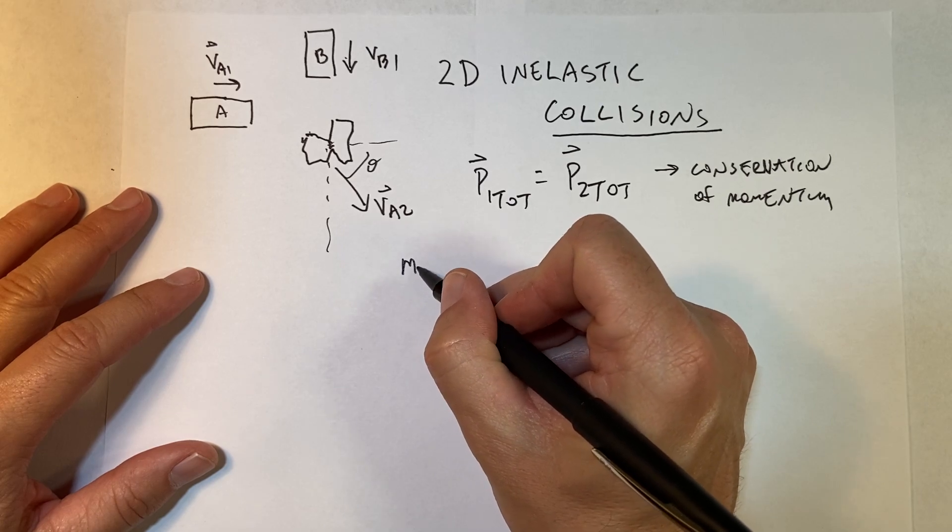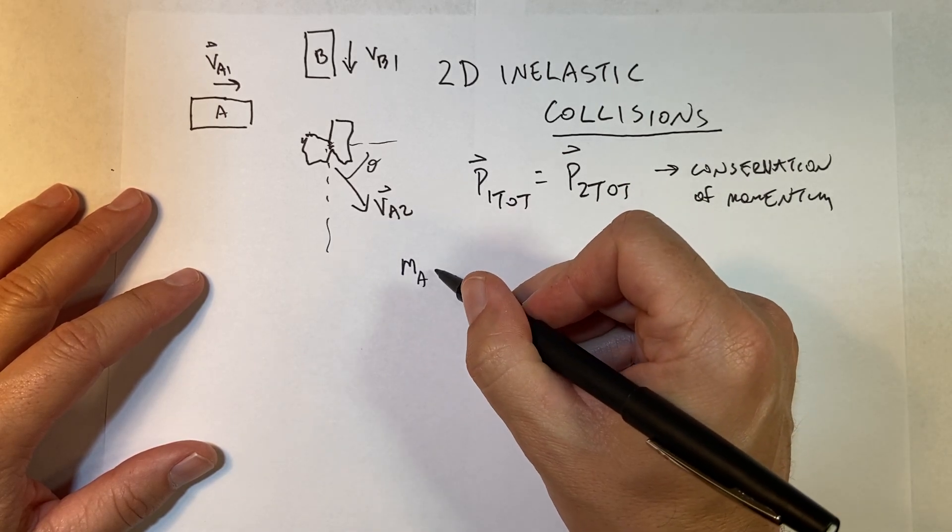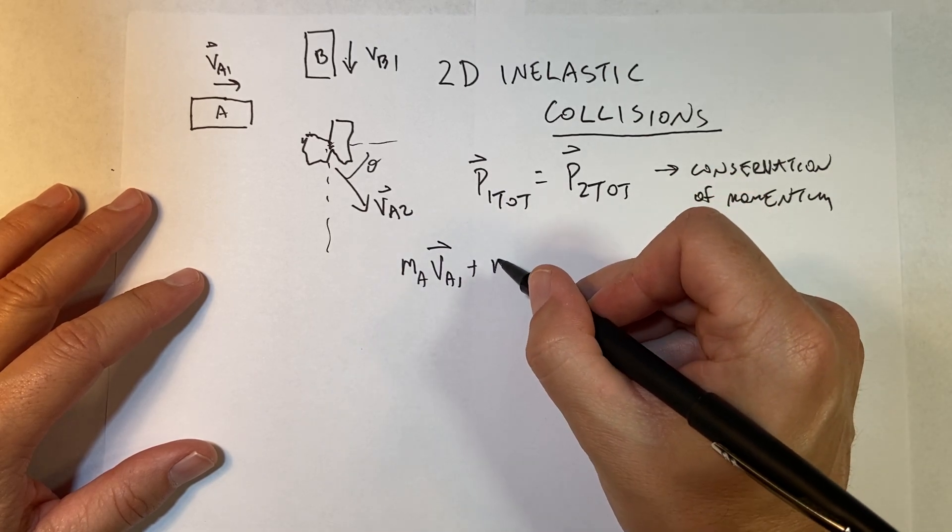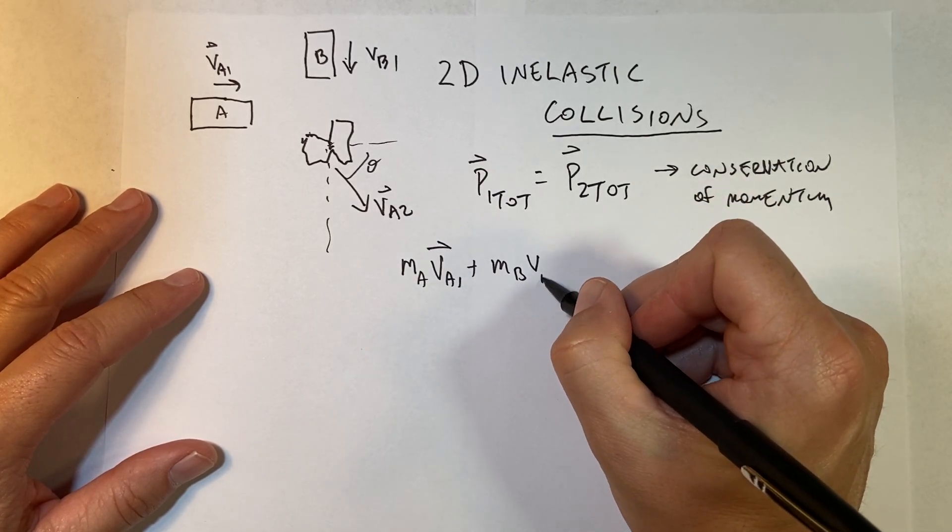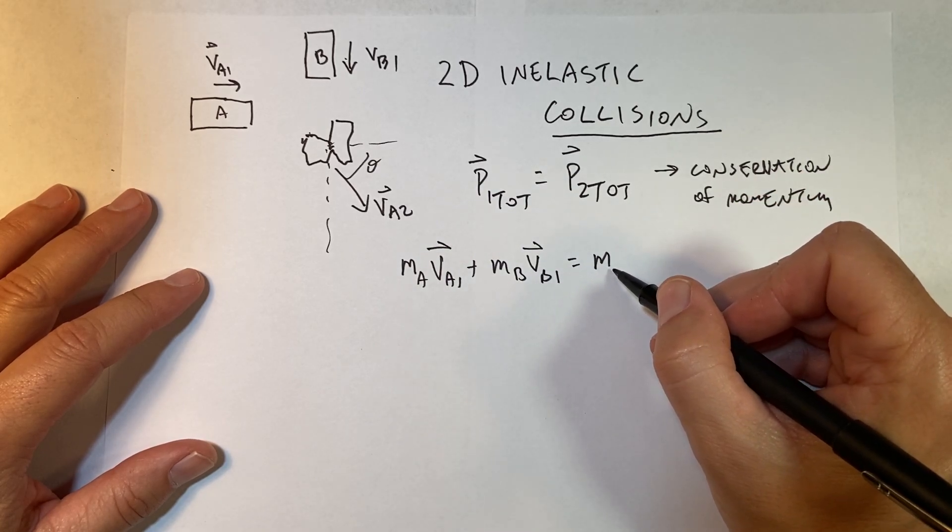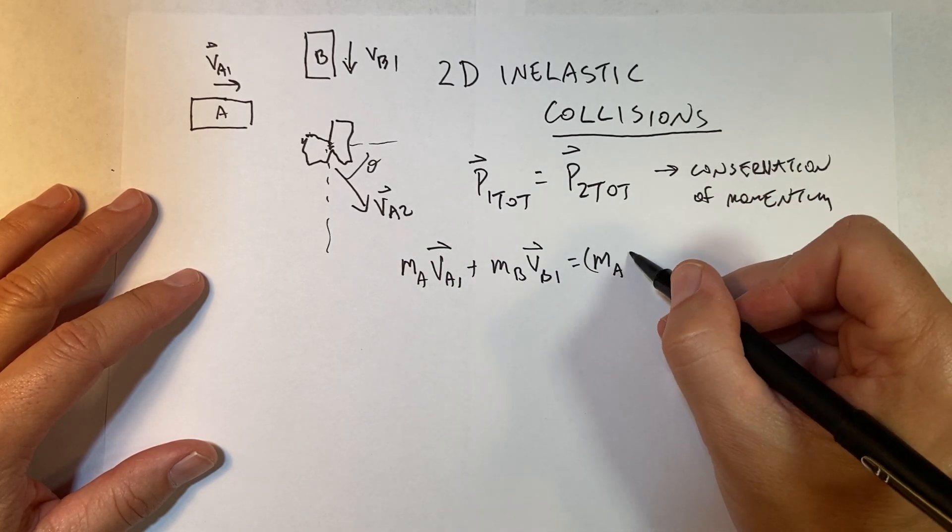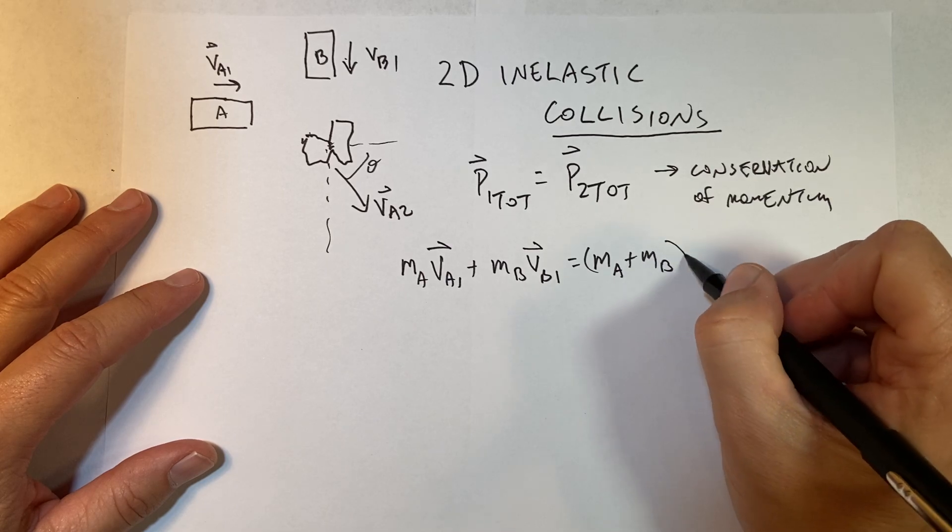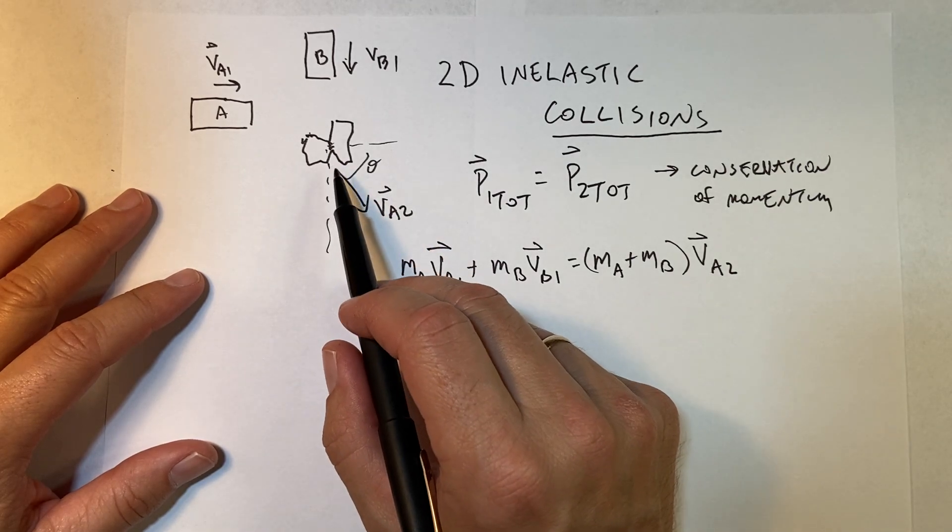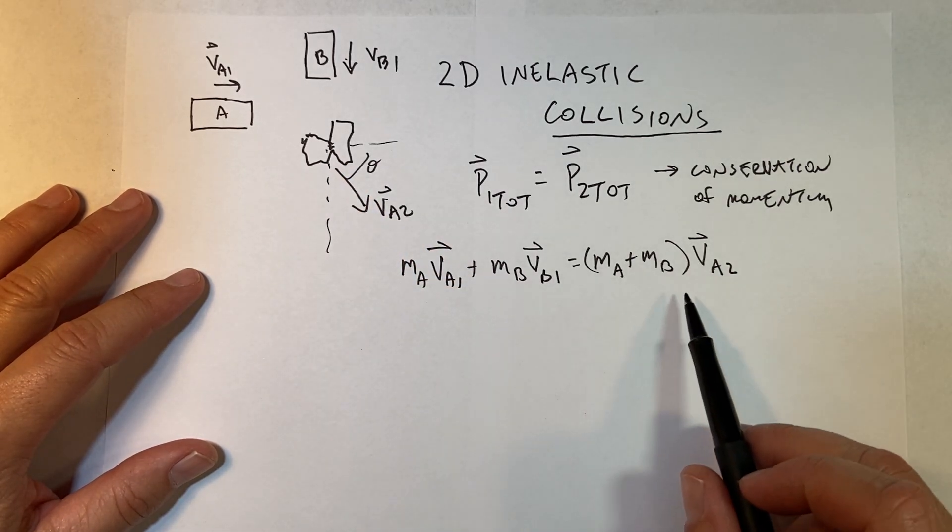m_A v_A1 vector plus m_B v_B1 vector equals (m_A + m_B) v_A2. So v_A2 and B have the same velocity afterwards, so I just need one value right there. This is the right problem.